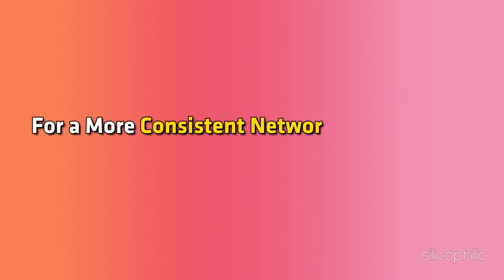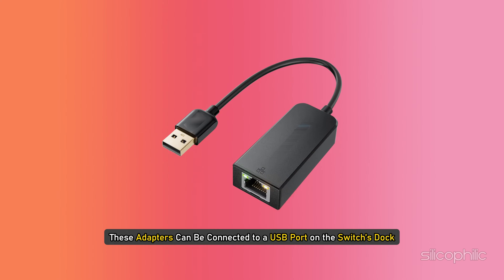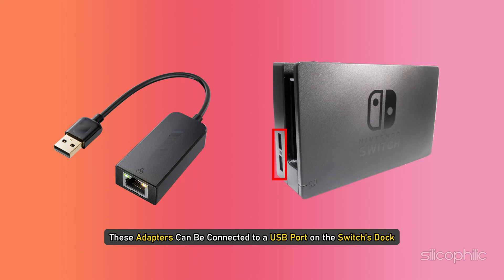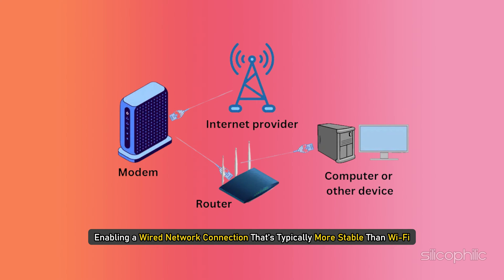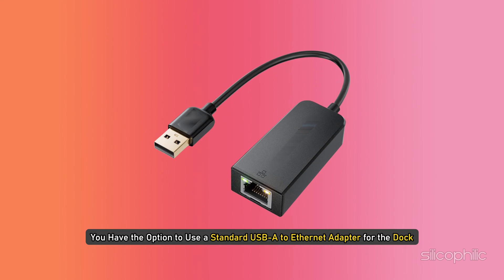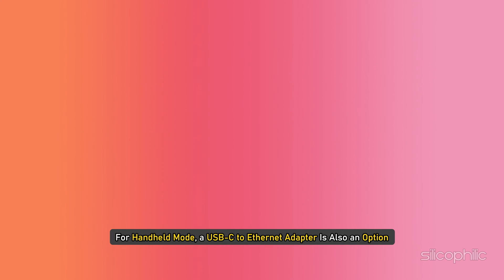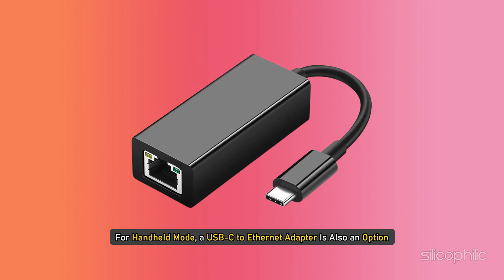Method 5: Use an Ethernet adapter. For more consistent network performance, an Ethernet adapter can be helpful. These adapters can be connected to a USB port on the Switch's dock, enabling a wired network connection that's typically more stable than Wi-Fi. You have the option to use a standard USB-A to Ethernet adapter for the dock. For handheld mode, a USB-C to Ethernet adapter is also an option.